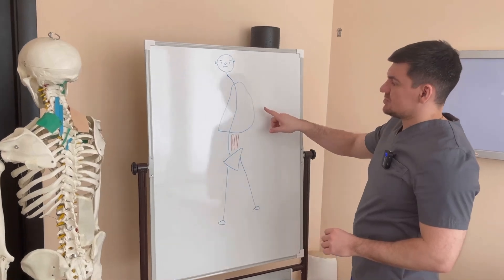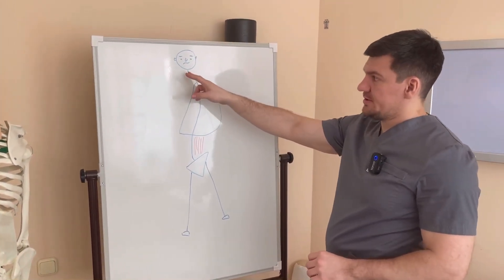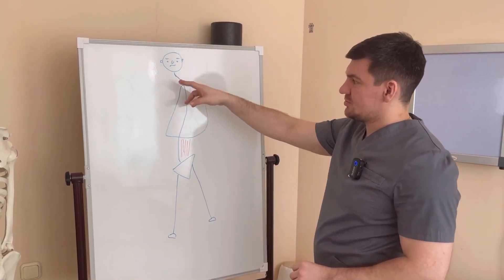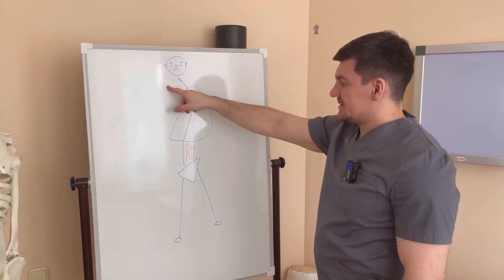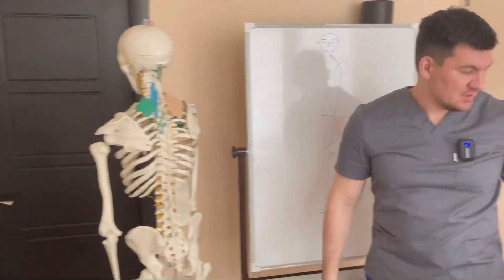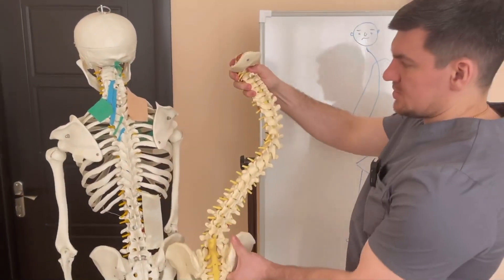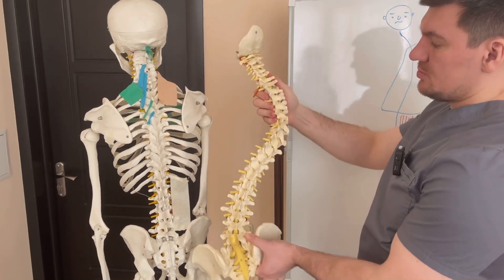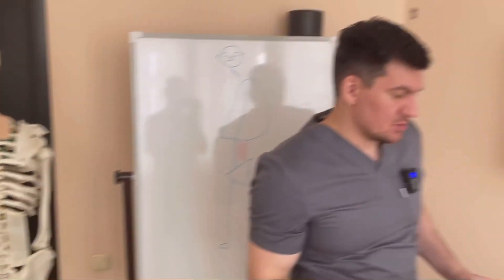Now if we look at this person from the back — he is facing away from us and turning his head to look at us. This is the right side, this is the left side. The apex of the arc is pointing this way. This kind of scoliosis is the most common one. Why is it the most common? What is it related to?